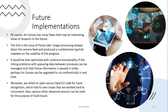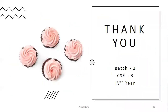AIR Canvas has many flaws that may be interesting areas of research in the future. The first is the issue of frame rate — image processing slows down the camera video feed and produces a cumbersome lag that impedes the usability of the program. This could be improved by using multi-core functionality; if timing problems with queuing data between processes can be managed so that frame information is passed out in order, AIR Canvas could be upgraded to run authentically in real-time. Moreover, the project relied on the open-source OpenCV code for hand recognition, which has its own issues that were worked hard to circumvent. Various other advanced sources can also be used for the purpose of multi-touch. Thank you.